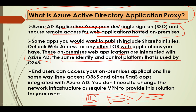These on-premises web applications are integrated with Azure AD — the same identity and control platform used by Office 365. End users can access on-premises applications the same way they access Office 365 and SaaS apps integrated with Azure AD. With Azure Active Directory Application Proxy, we can access both Azure-based and Azure-integrated applications kept on premises without any problem. You don't need to change your entire network infrastructure or require a VPN to provide this remote access solution.